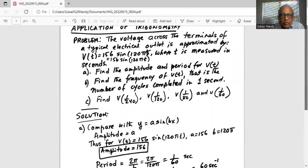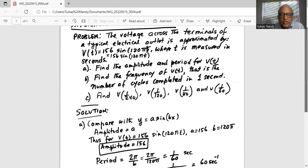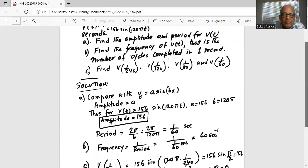We know the voltage equation is V equals 156 sine 120 pi t. We will compare that with y equals a sine b x. In this case, the amplitude is a, which is 156. And my b is 120 pi. So period formula is 2 pi over b, which is 2 pi over 120 pi, which is 1 over 60 seconds. That is the answer for part a.